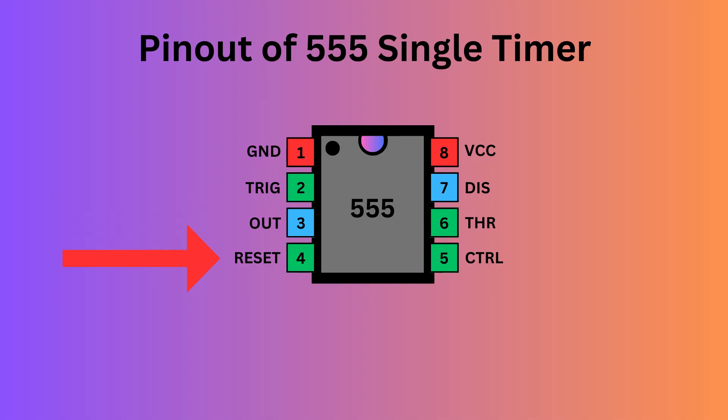Pin 4, the reset pin, is used to reset the 555 timer's internal flip-flop. Pin 5 serves as the control pin, enabling you to adjust the threshold voltage levels used by the internal comparators to set and reset the flip-flop.